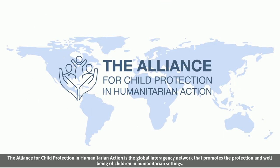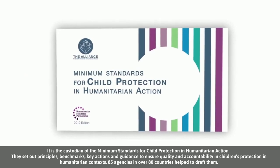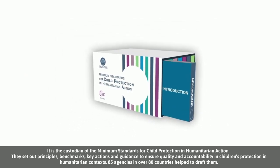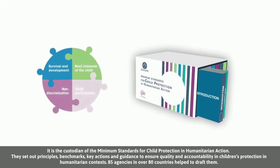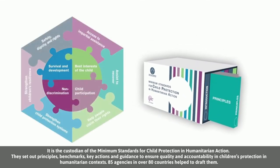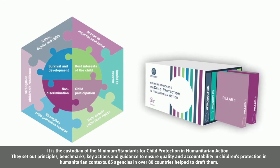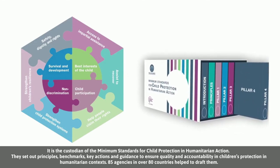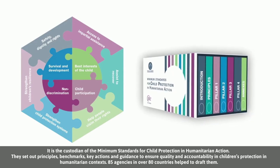The Alliance for Child Protection and Humanitarian Action is a global interagency network that promotes the protection and well-being of children in humanitarian settings. It is a custodian of the minimum standards for child protection in humanitarian action. They set out principles, benchmarks, key actions and guidance to ensure quality and accountability in children's protection in humanitarian contexts. 85 agencies in over 80 countries helped to draft them.